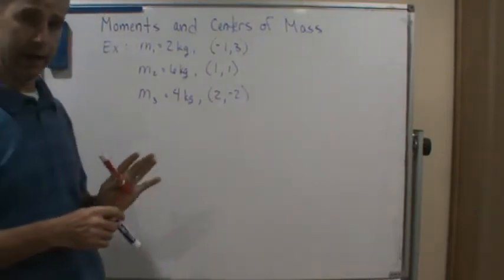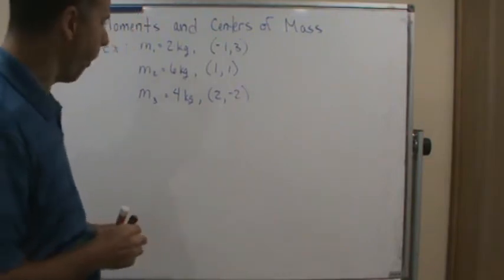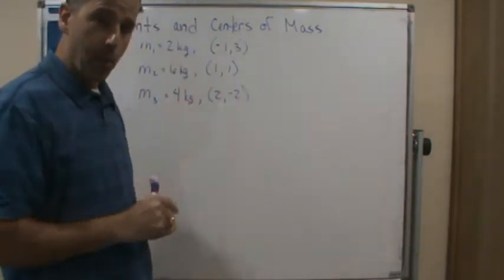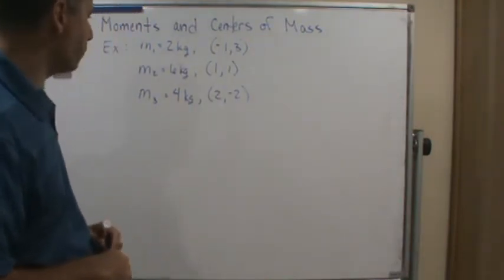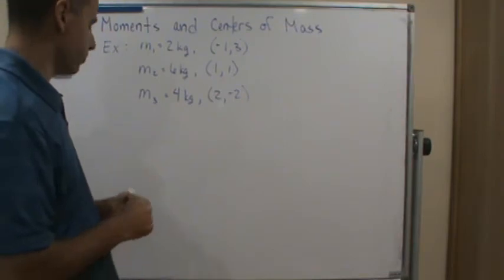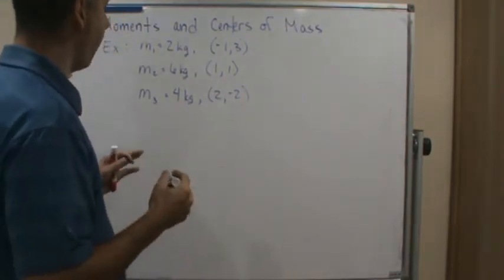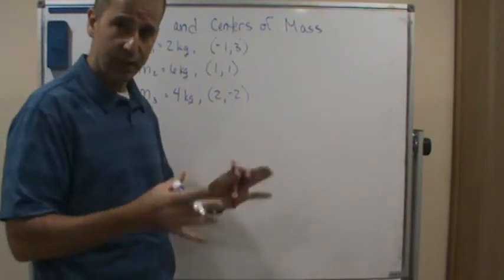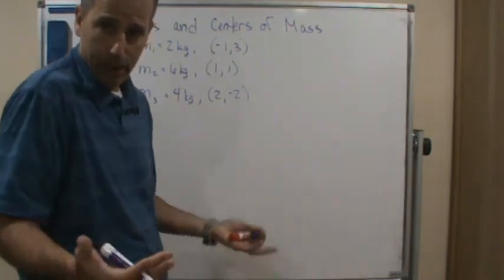Okay, and we want to find the center of mass, or in other words the balancing point among those three points. So the first thing we're going to do is let's find the center of mass. Basically we're just putting the pieces together and then we're going to calculate x bar and y bar. That's what we need to do.